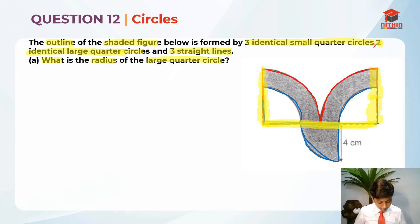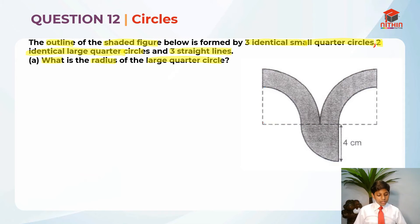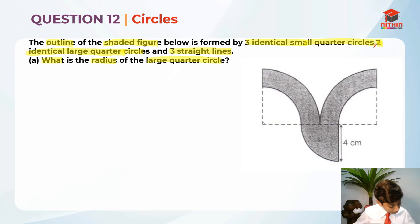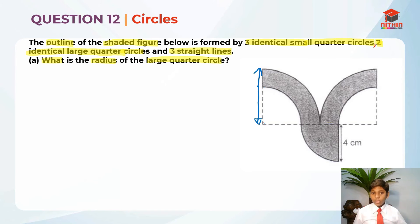They have also told us there are three straight lines — basically this line over here, this line, and this line again. So these are the three straight lines. I think you understand that now, so let me erase them out. What is the radius of the large quarter circle? Let me show you where the radius of the large quarter circle is — here is the radius.